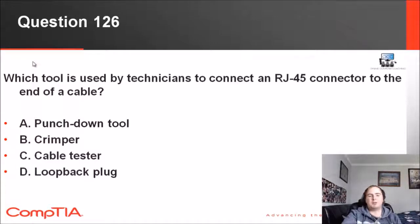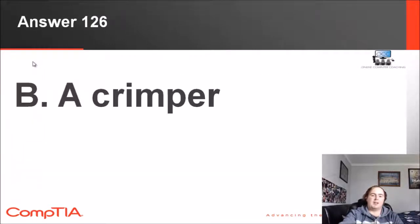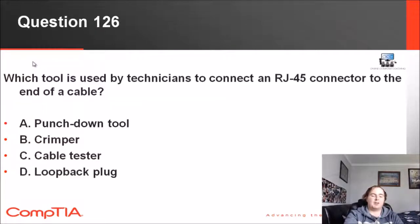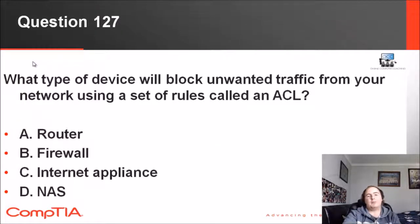126: Which tool is used by technicians to connect an RJ45 connector to the end of a cable? You've got punch down tool, crimper, cable tester, loopback plug. Loopback plug is a network test tool. I'll just give you the answer on this one, guys—it's crimper. You're probably thinking punch down tool. A punch down tool is the end process where it forms into a cable, but in terms of the answer there, it's actually the crimper that connects it.